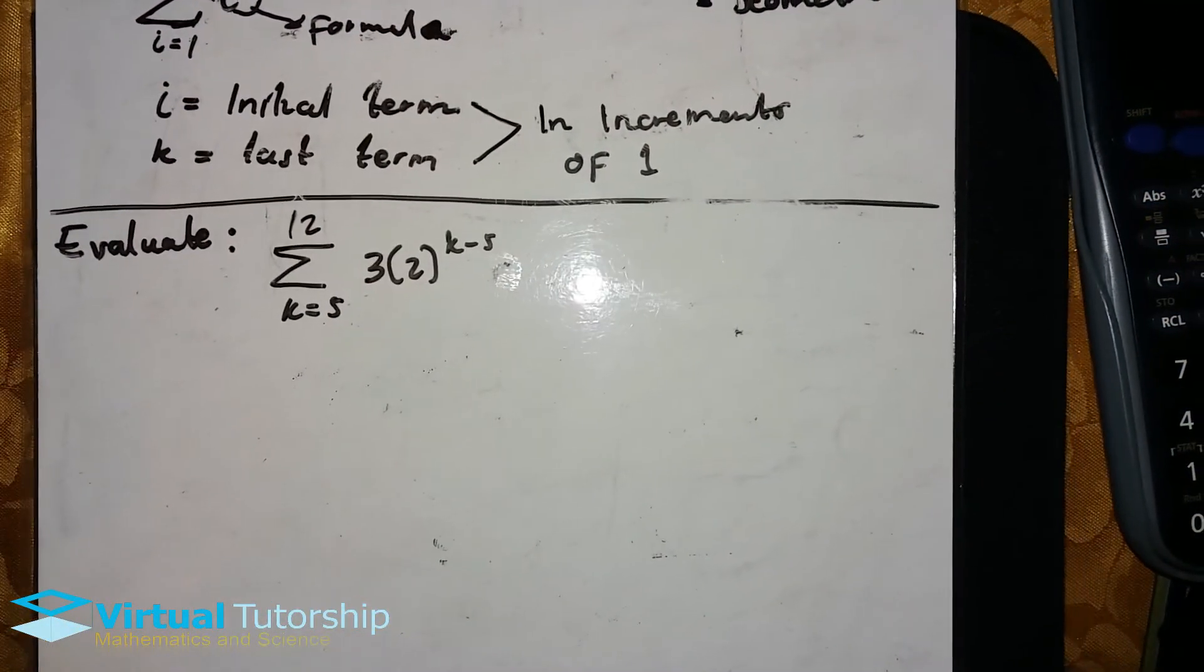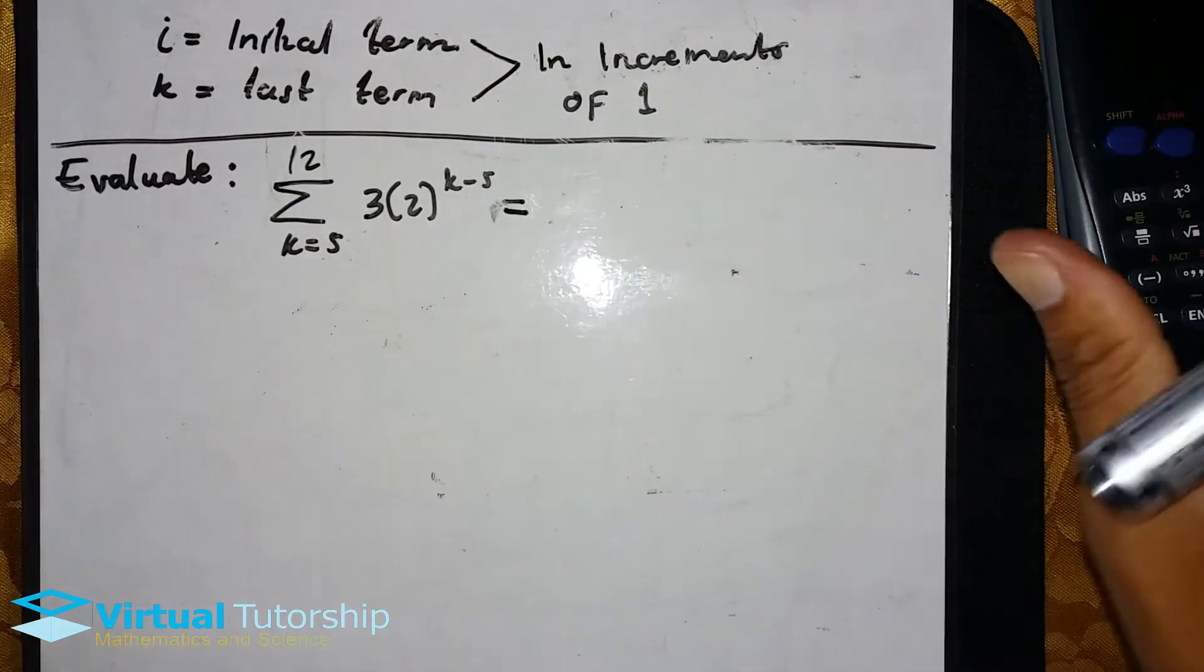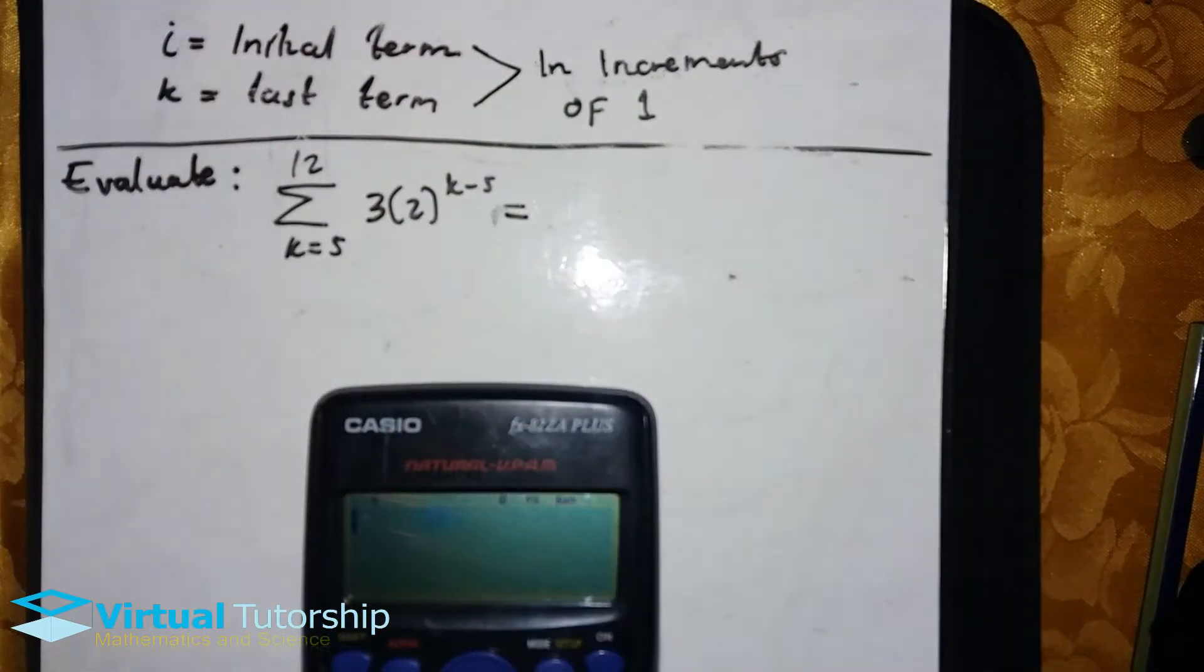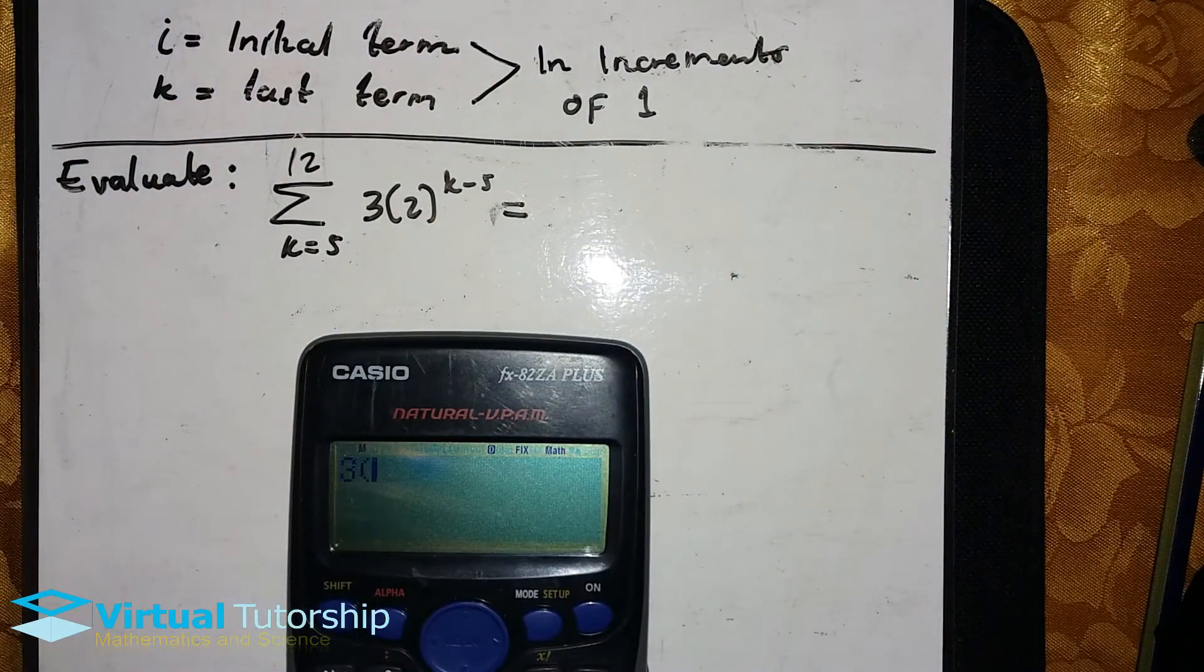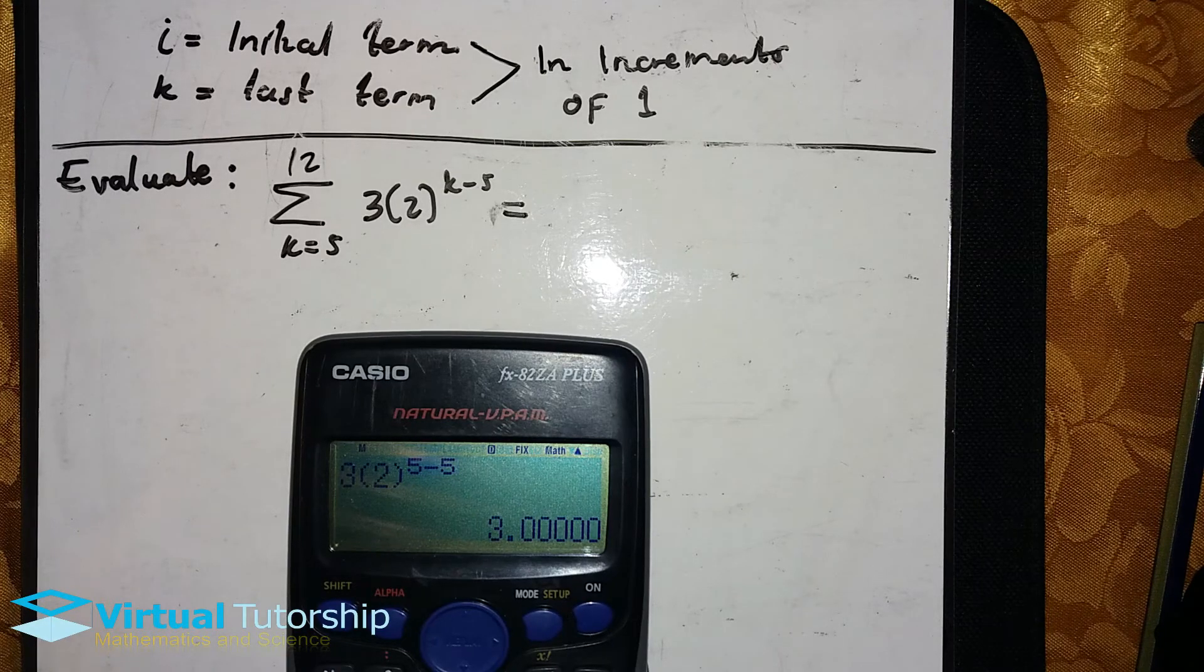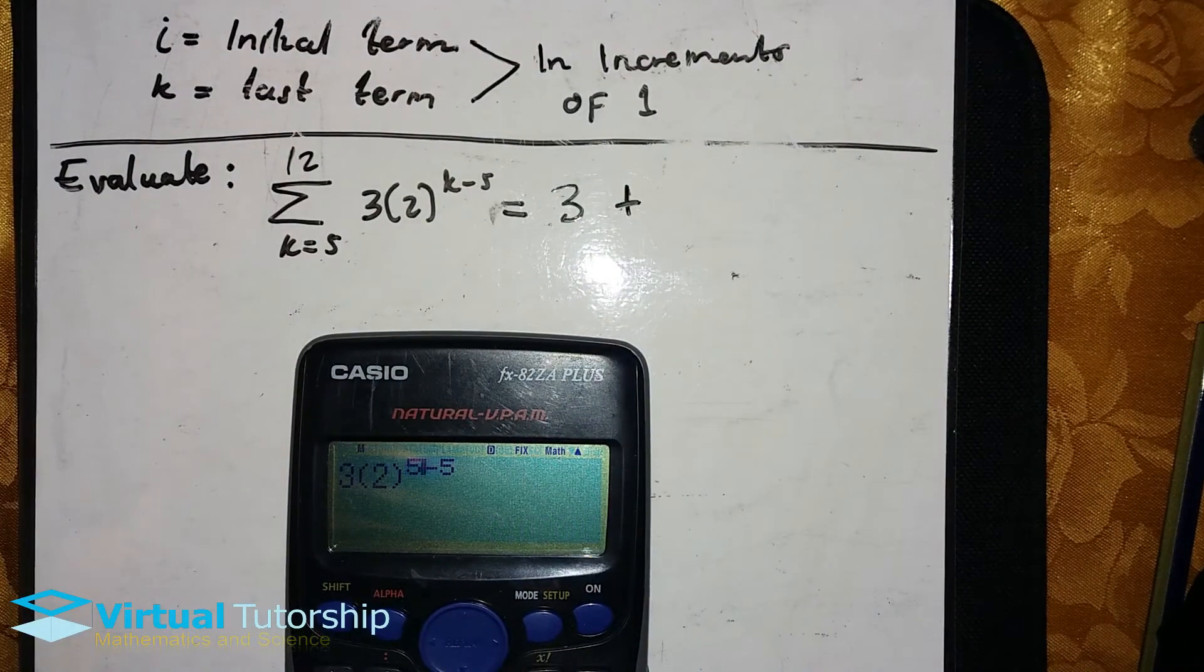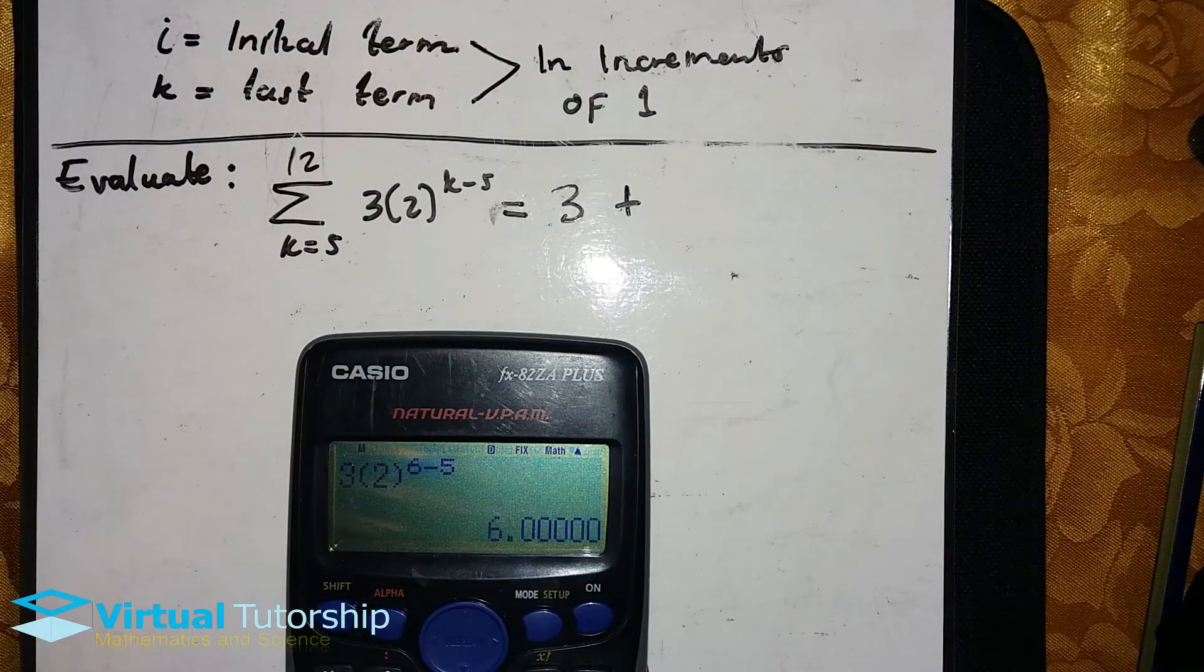Okay, now another example. I need to expand this. So it's 3 times 2 raised to exponent k, where the first k is 5, and then minus 5, and the last one is 12. So it's 3 raised to 2^5 plus the second term, where k equals 6. Remember, increments of 1. All the way up to k equals 12.